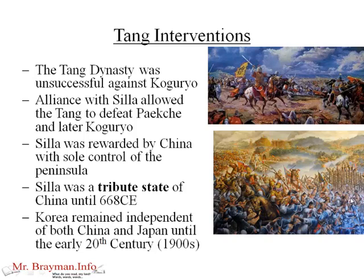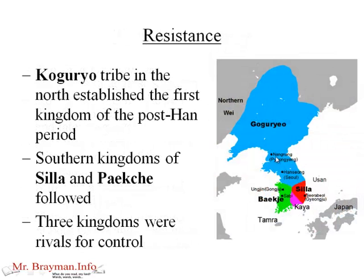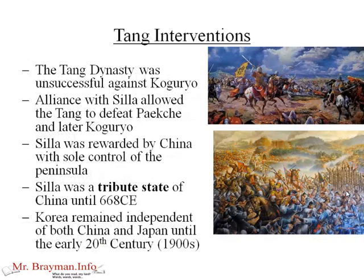It's kind of interesting — the people of Silla out on the edge were able to unite with the Tang to defeat Pakche and Kogoruyo. As a result, Silla was rewarded by China with sole control of the peninsula and remained a very powerful tribute state of China until 668 CE — roughly about a 50-year window. Tribute states: we'll leave you alone and you can be your own country as long as you give us money every year. This helped Korean independence, and politically Korea remained independent of both China and Japan until the early 20th century. Silla's gambit in turning on the other two Korean kingdoms was really successful for them.